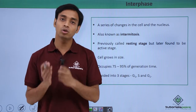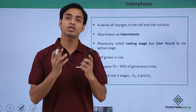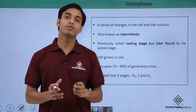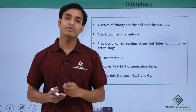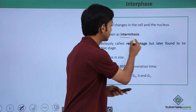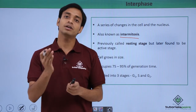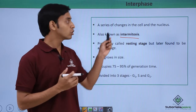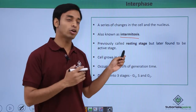This phase called interphase involves a series of changes that are happening both inside the cell — that is in the cytoplasm — as well as the changes happening inside the nucleus. So it involves all the changes inside the cell. This phase of interphase is also known as intermitosis, and it happens before the M phase or mitosis.